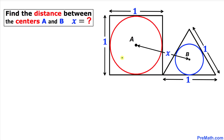Welcome to PreMath. In this video tutorial we have these two circles as you can see in this figure. The red circle is inscribed in a square, whereas the small blue circle is inscribed in an equilateral triangle. The side length of both the square and the equilateral triangle is 1. We are going to find the distance x between the two centers A and B.